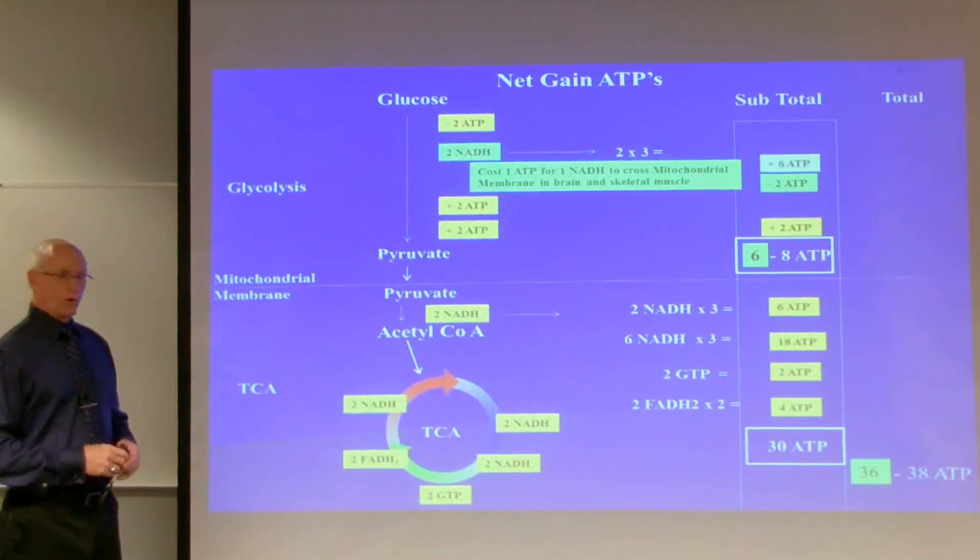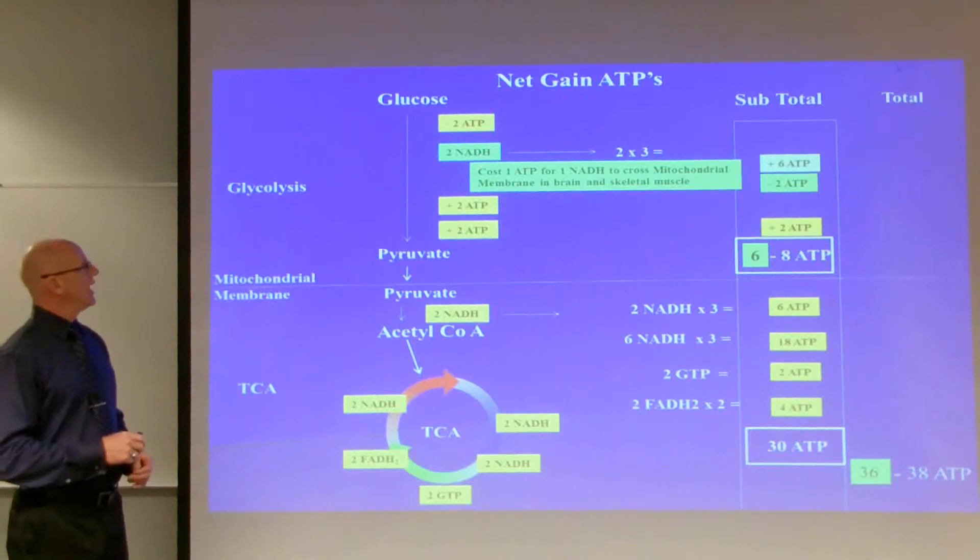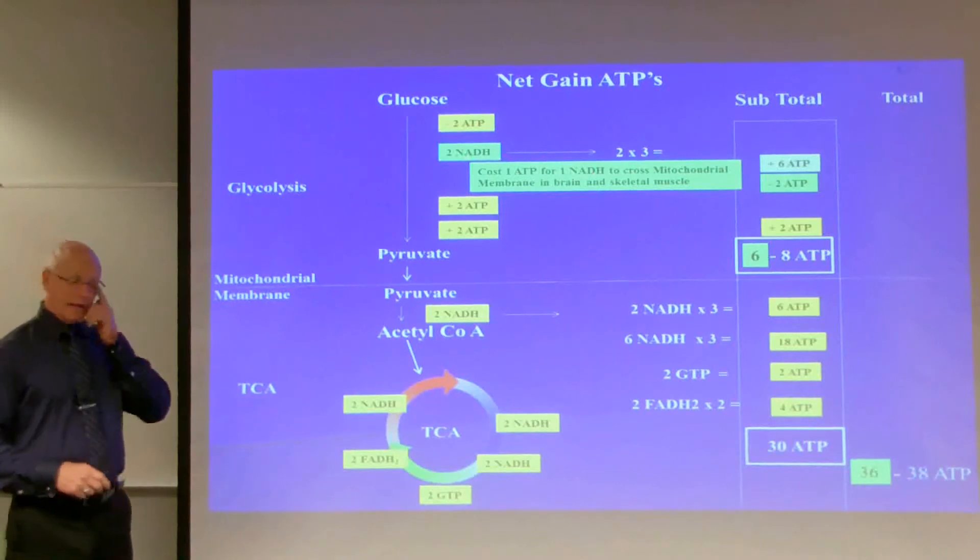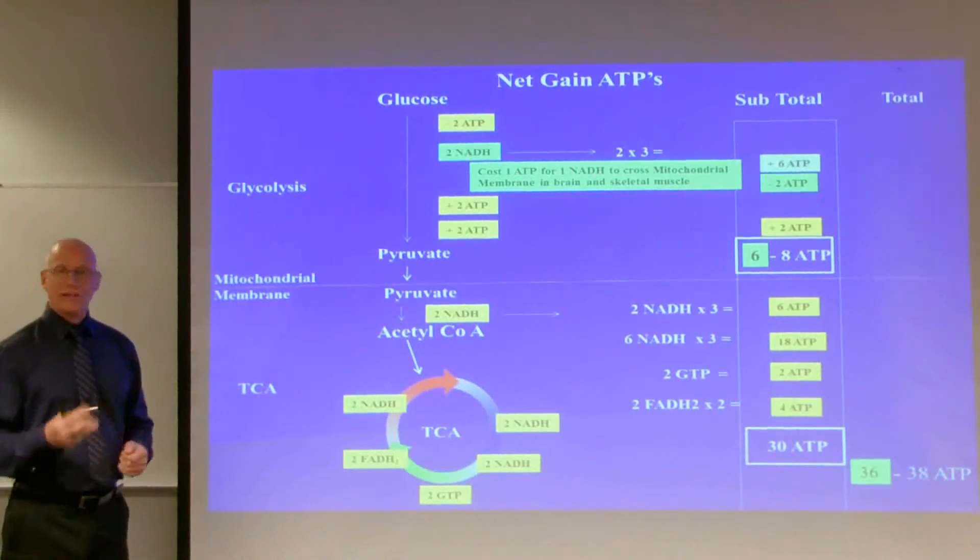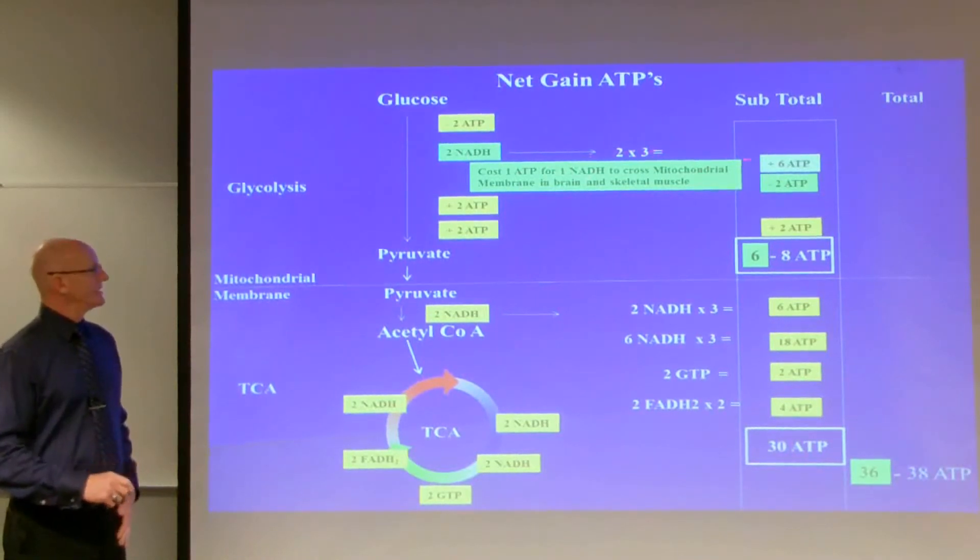And whenever we converted glyceraldehyde 3-phosphate, we oxidized that and we reduced one NADH. So now we have, since it's two molecules of pyruvate, we have two NADHs. So we have a negative two ATPs, and we've gained two NADHs. Now, for every NADH, that's equivalent to three ATPs once it goes through the electron transport chain. So let's count some beans. Two times three is six.